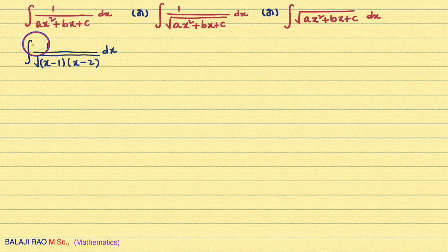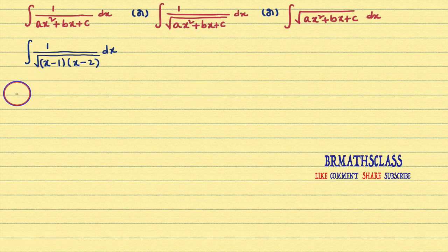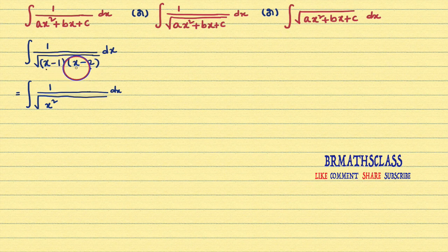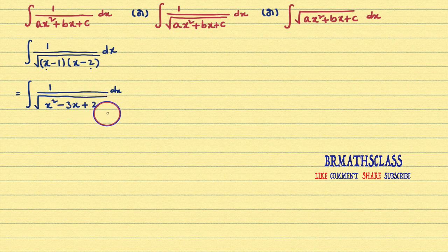First, we will try to identify whether this integral is any one of these three integrals or not. I will do a little simplification here so that we can easily compare. Integral of 1 divided by square root of — in the denominator, you multiply (x-1)(x-2): x times x is x², x times -2 is -2x, -1 times x is -x, so -2x - x is -3x, and -1 times -2 is +2. So this is integral of 1 divided by square root of x² - 3x + 2 dx.